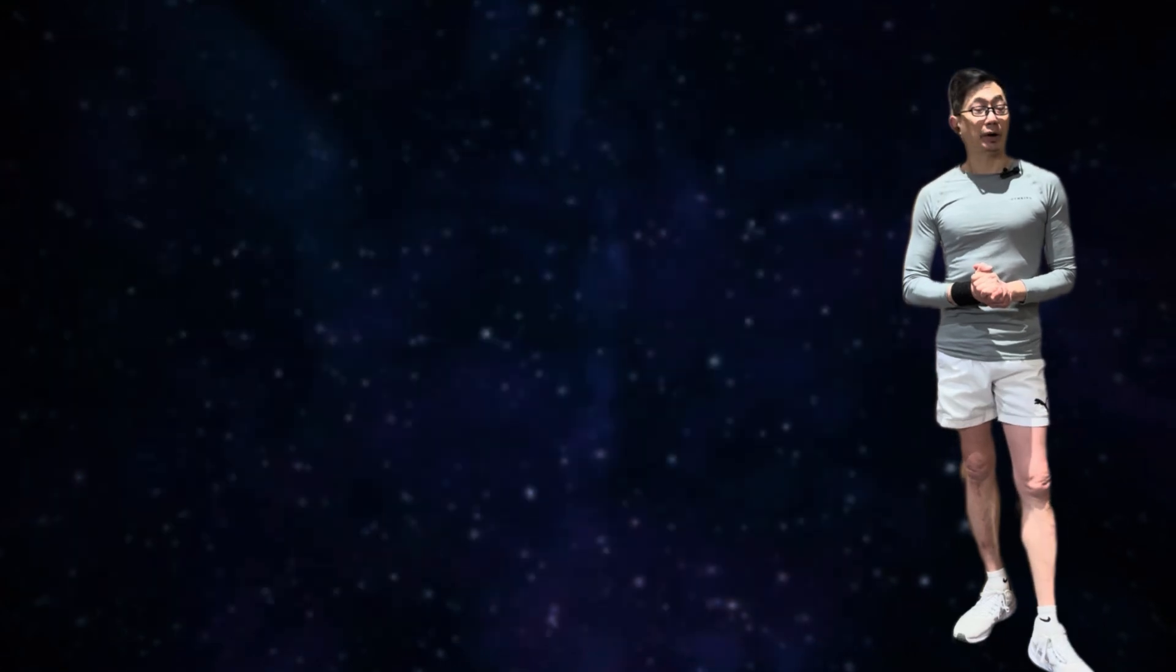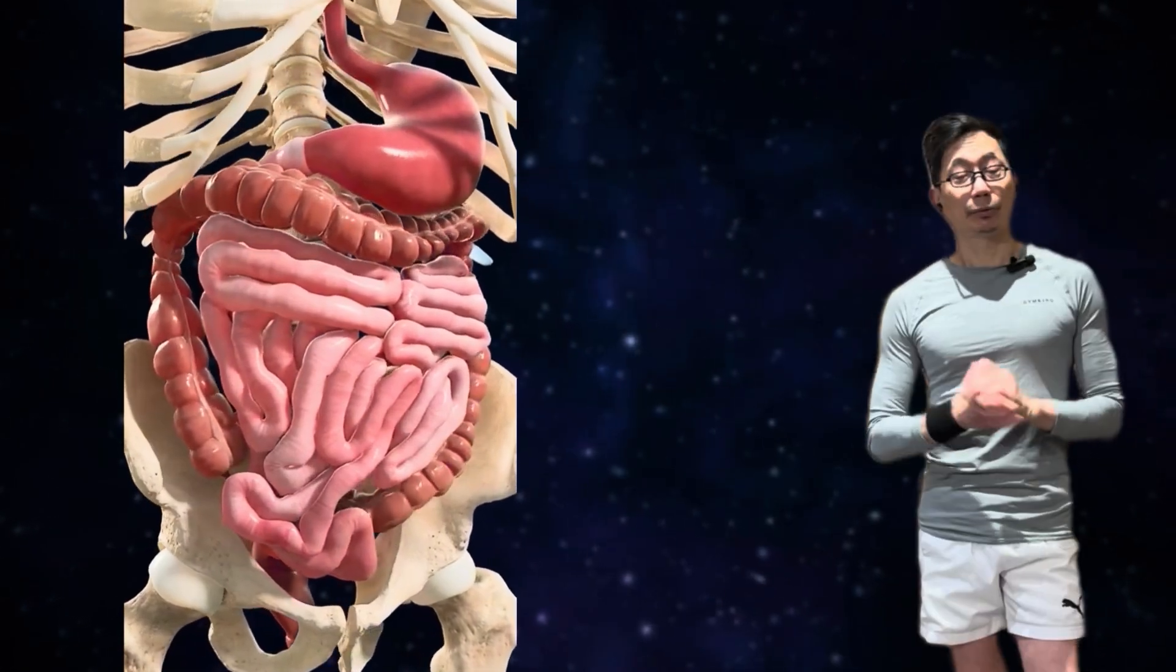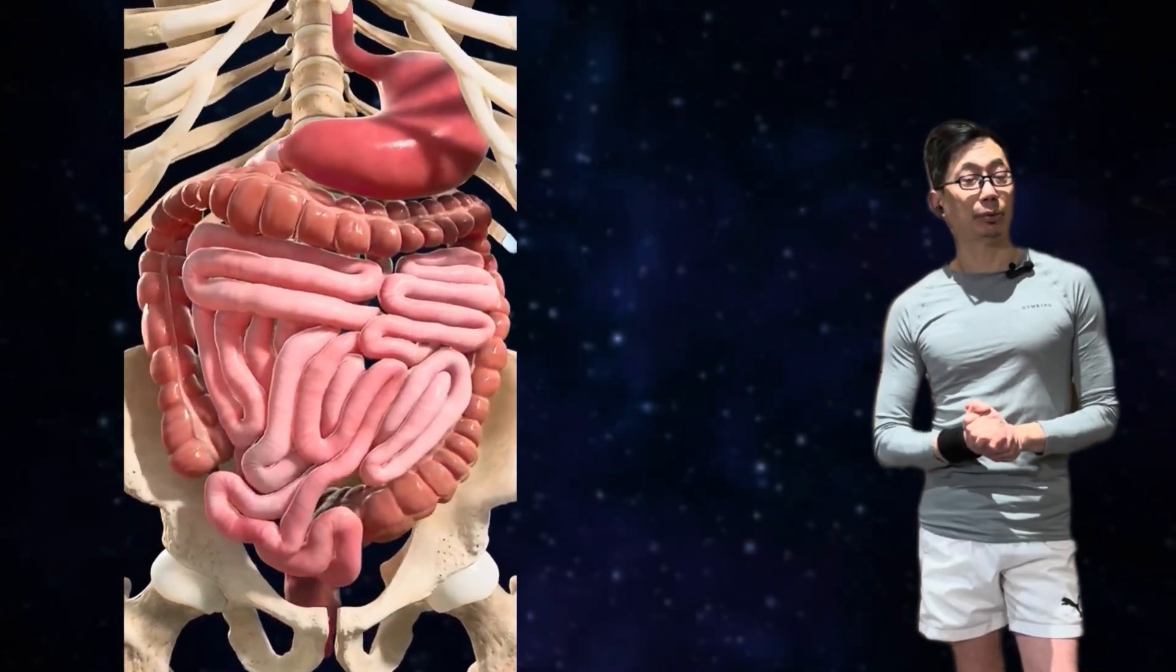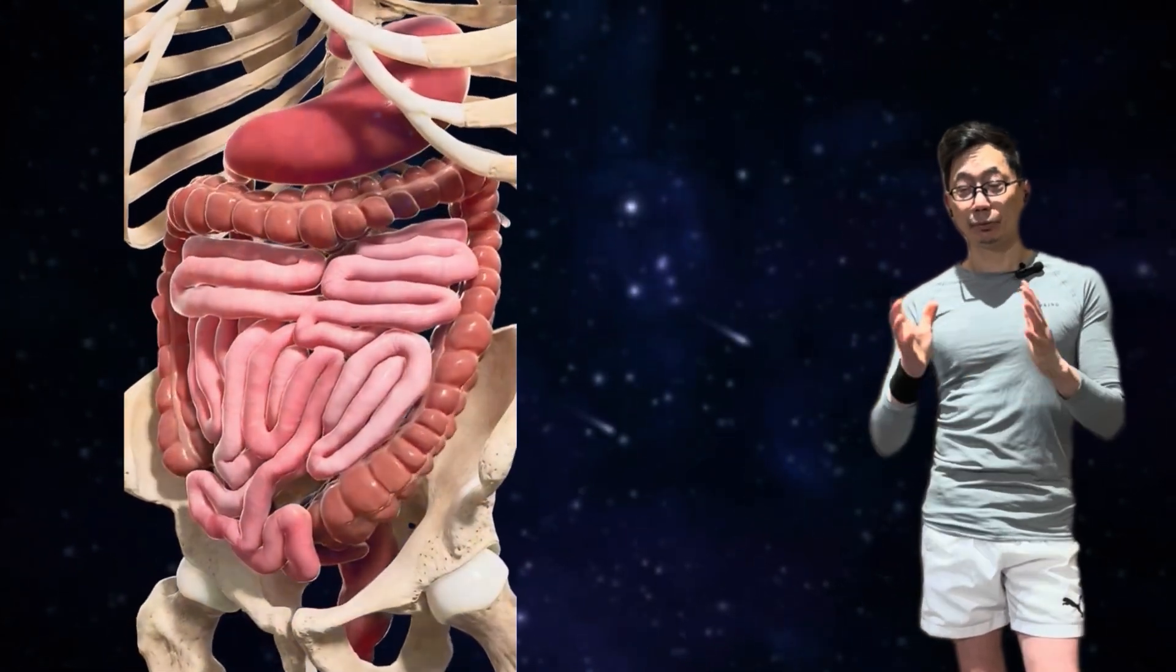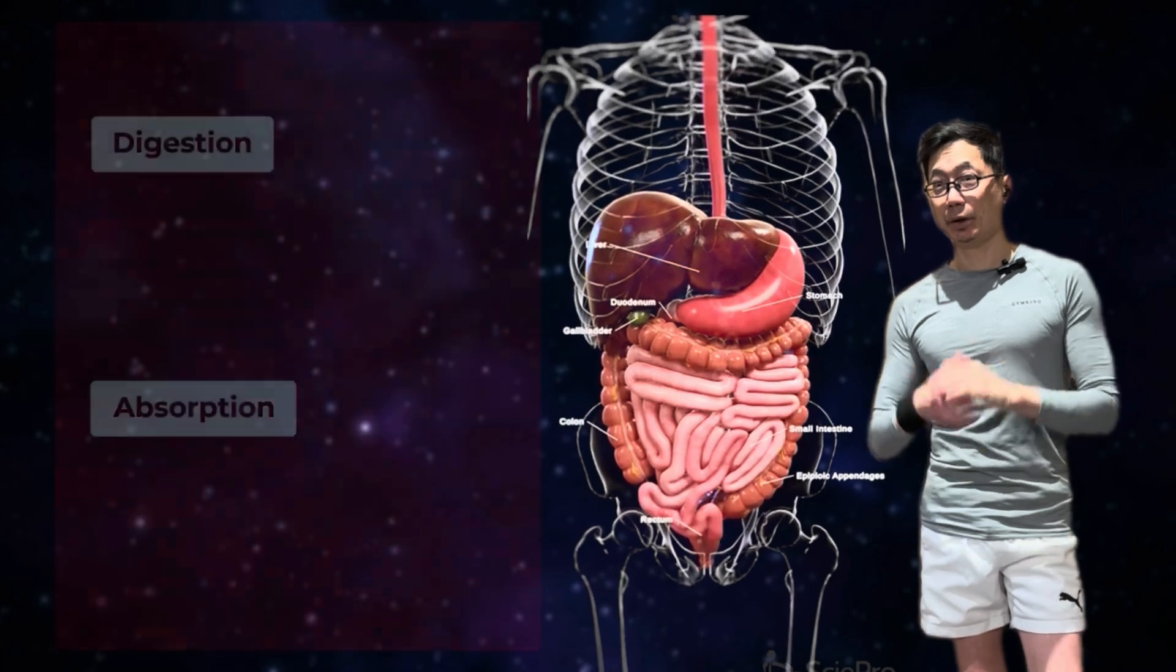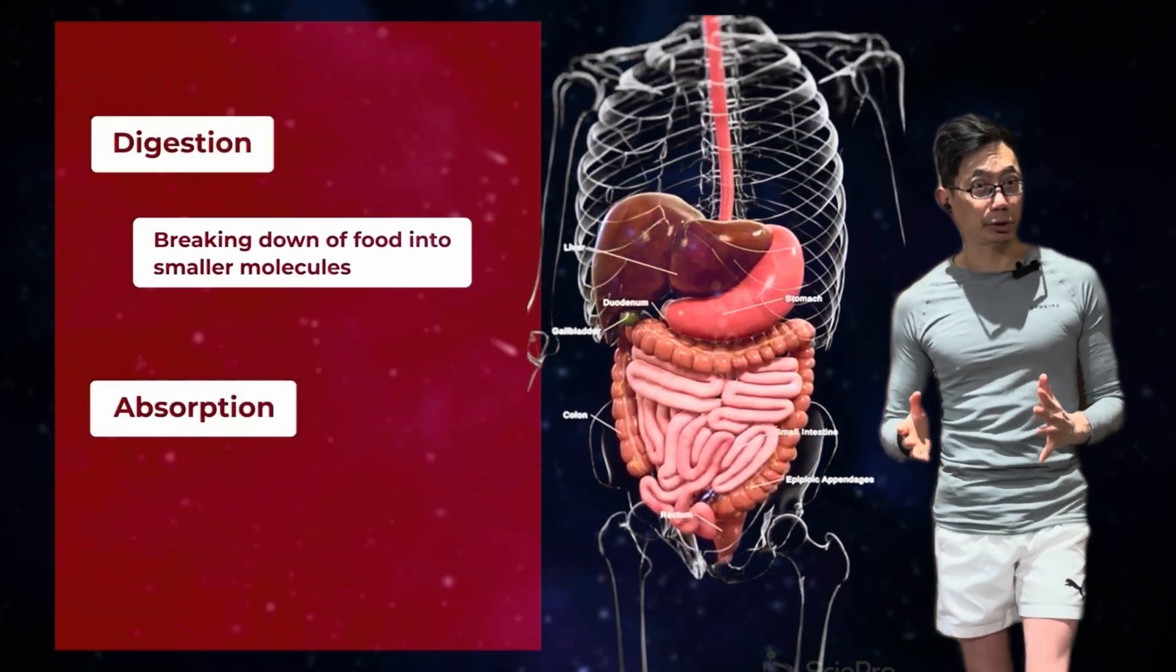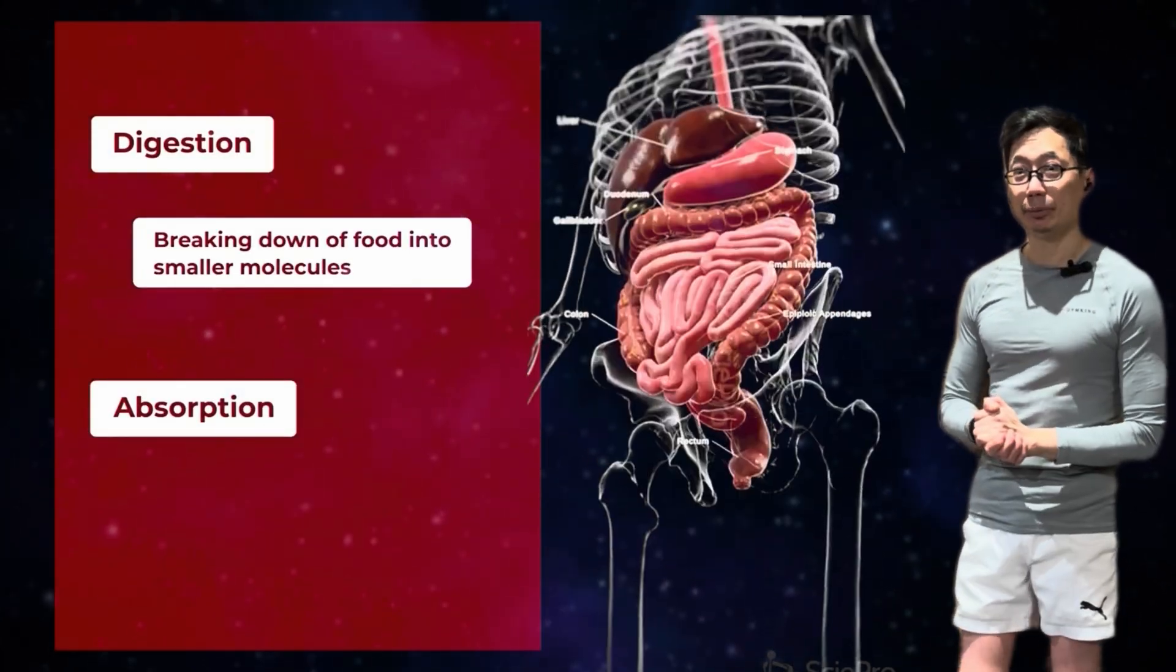Let's start our video today with the digestion of protein. That is the breaking down of the food into smaller molecules, which can then be absorbed into our bloodstream. We will soon see that certain segments of our digestive tract are primarily for dealing with digestion and other segments with absorption.